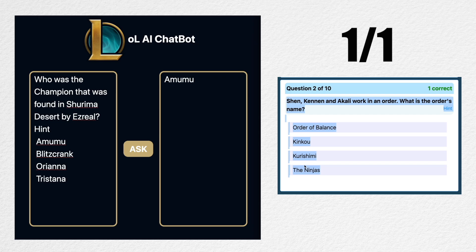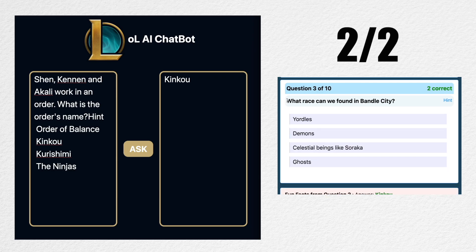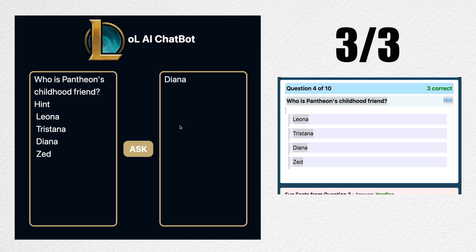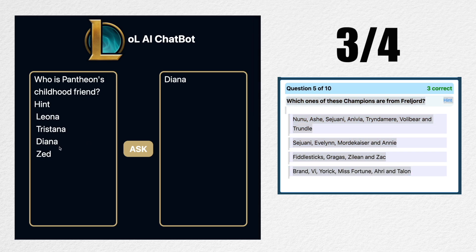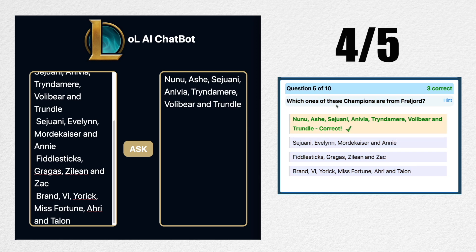Let's try this one: Shen, Kennen, and Akali work in an order — what is the order's name? Kinkou. What race can we find in Bandle City? These are pretty easy questions, but it's kind of cool that it's even getting them correct. Three for three. Who is Pantheon's childhood friend? That looks wrong actually. It was Leona, so we missed one. What champions are from the Freljord? Nunu, Ashe, Sejuani, Anivia, Tryndamere, Volibear, and Trundle — that is correct.